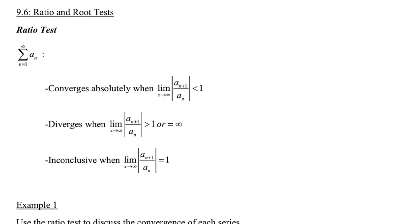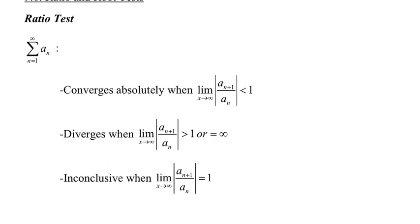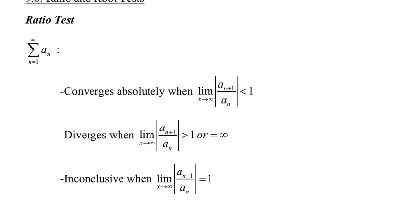Hello, everybody. We're going to get into our last two tests for convergence or divergence. The nice thing is that these two tests — the ratio and the root test — will be able to determine absolute convergence straight off the bat. So we can use these if we're trying to figure out absolute convergence, conditional convergence, or anything like that.